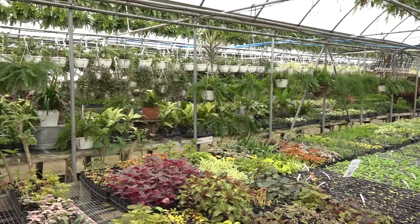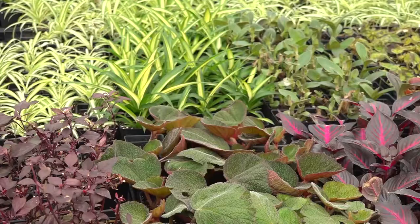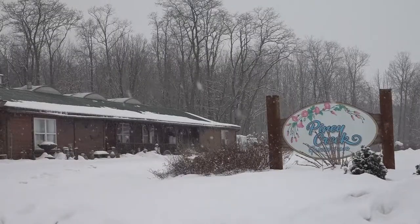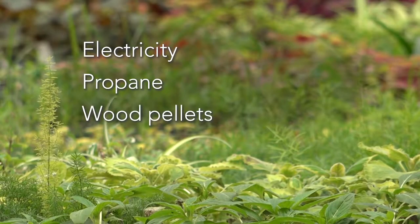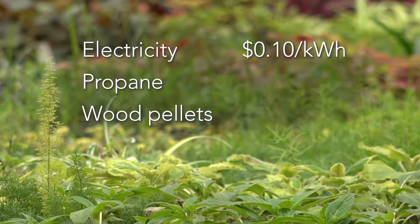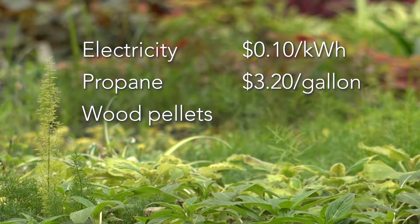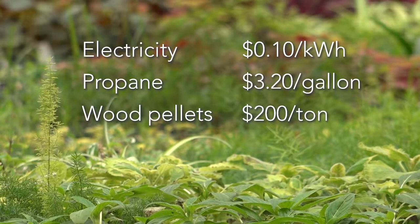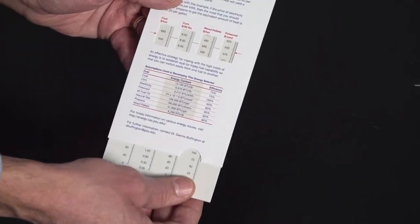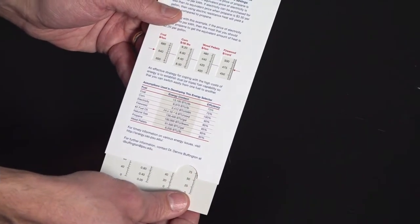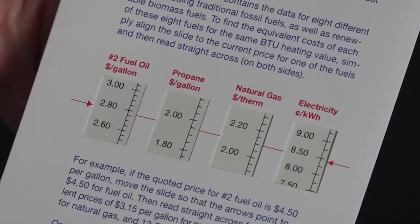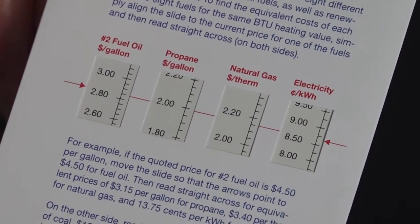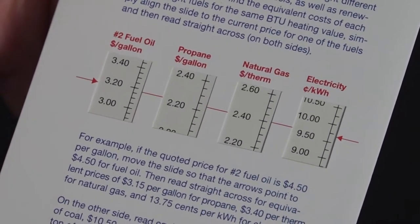For the purpose of this example, let's say that you are a greenhouse grower who needs to provide winter heat to the greenhouse, and the three heating options you are considering are electricity, propane, and wood pellets. Electricity is about 10 cents a kilowatt-hour, propane is $3.20 per gallon, and wood pellets cost $200 per ton. Once you have your prices, you can slide the inner card until the arrow on one side of the windows points to the price for that fuel. Let's use electricity as our reference and slide the inner card until the electricity window points to 10.00.